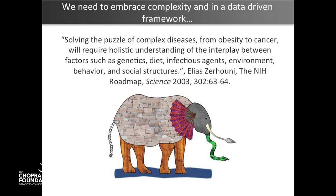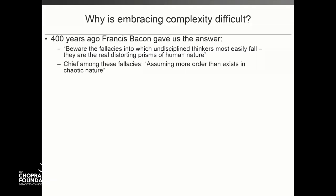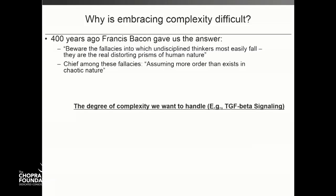We need to embrace complexity. We need to not shy away, not look in single dimensions, but understand how they're all integrated. Much like the story of the blind man and the elephant — if you're sampling a single part of that elephant at a time, you can walk away with a very different understanding than if you're sampling the animal as a whole. The problem is that embracing complexity is very difficult. We can go back 400 years to Francis Bacon, who gave us the answer — he was talking about the fallacies to which we succumb in our uncritical thinking, chief among these being assuming more order than actually exists in chaotic nature.